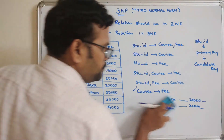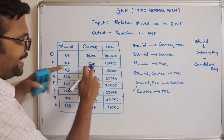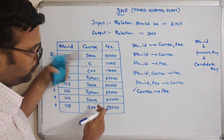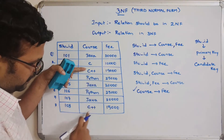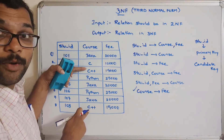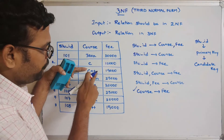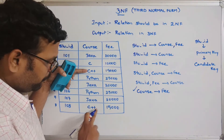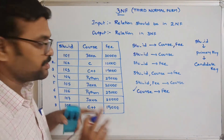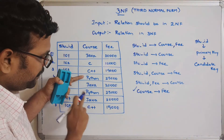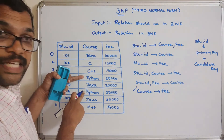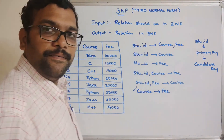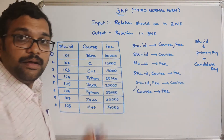Check C — is there another tuple with C? No. Go to C++. Yes, there is another C++. The corresponding Y value for the third tuple is 15,000 and for the eighth tuple is also 15,000. Then check Python — there is one more column with the same name and both Y values are equal. So we can conclude that course determines fee.